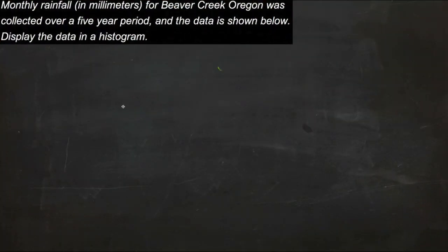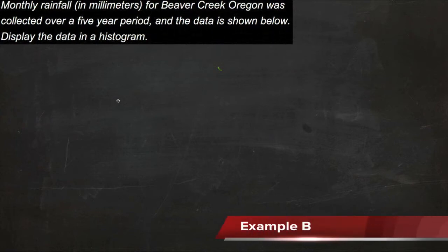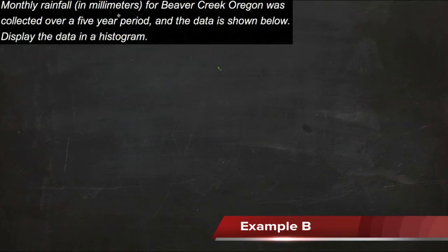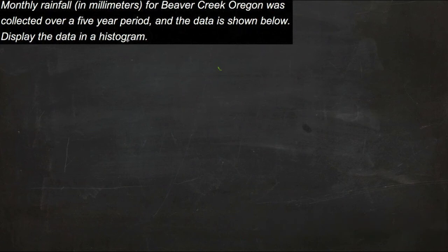One question I hear time and time again from my students is: why do I need to bother learning how to make different kinds of tables? And this example here I think is an excellent illustration of that. It says that monthly rainfall in millimeters for Beaver Creek was collected over a five-year period, and the data is shown below. We're supposed to display the data in a histogram.